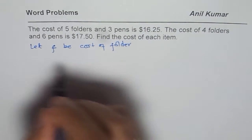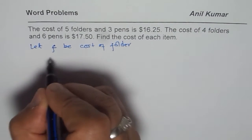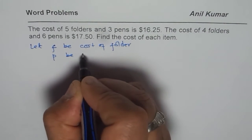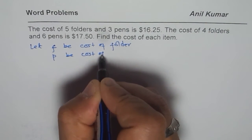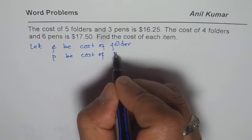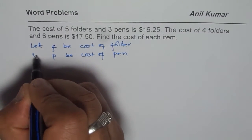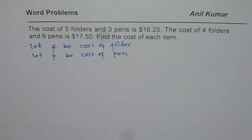Let F be the cost of folder and let P be cost of each pen. So that is the first thing. You have to define your variables.